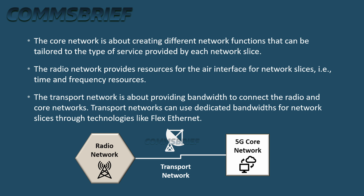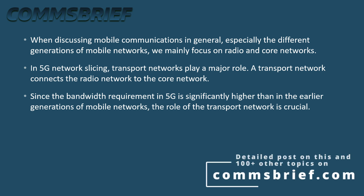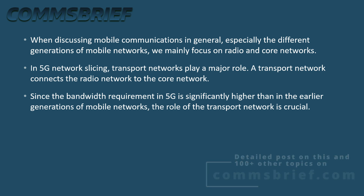Transport networks can use dedicated bandwidths for network slices through technologies like Flex Ethernet. When discussing mobile communications, we mainly focus on radio and core networks, but in 5G network slicing, transport networks play a major role. A transport network connects the radio network to the core network, and since the bandwidth requirement in 5G is significantly higher than in earlier generations, the role of transport networks is crucial.